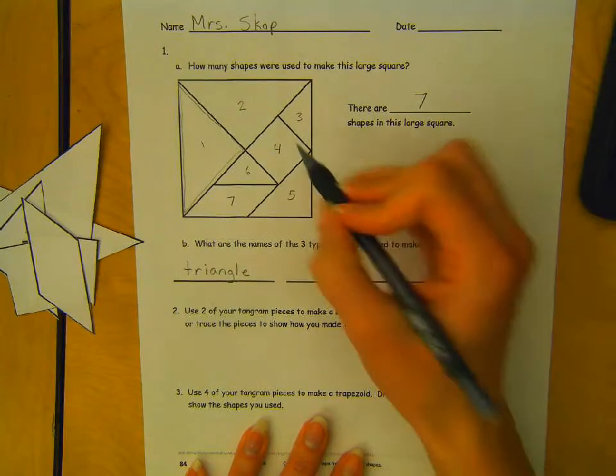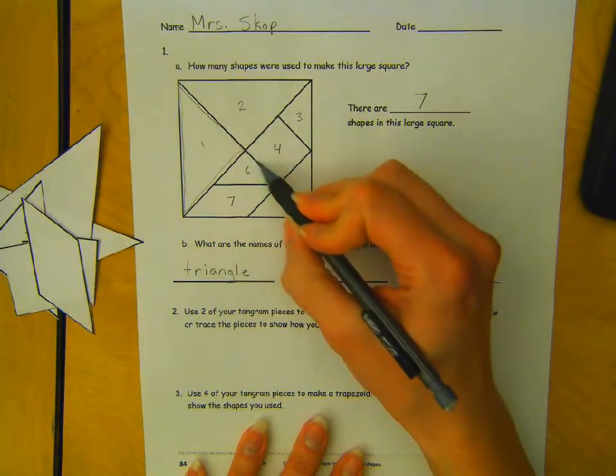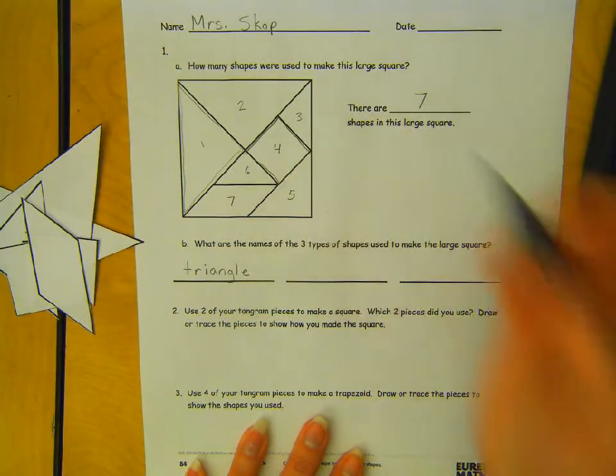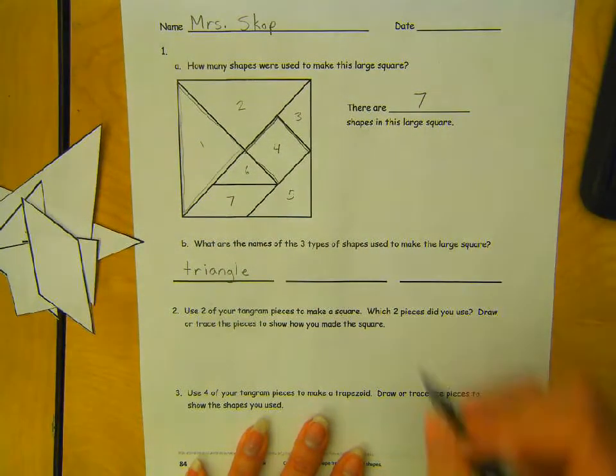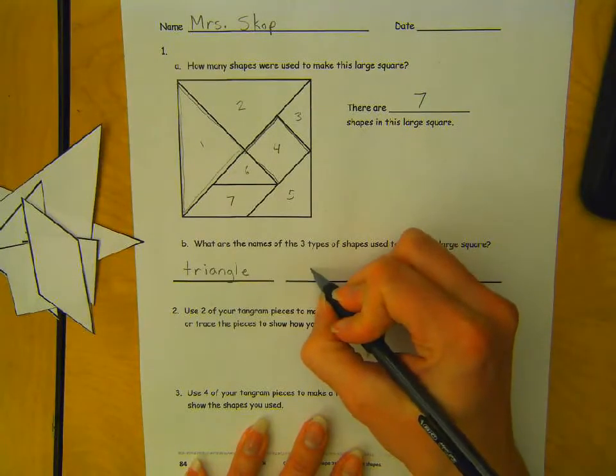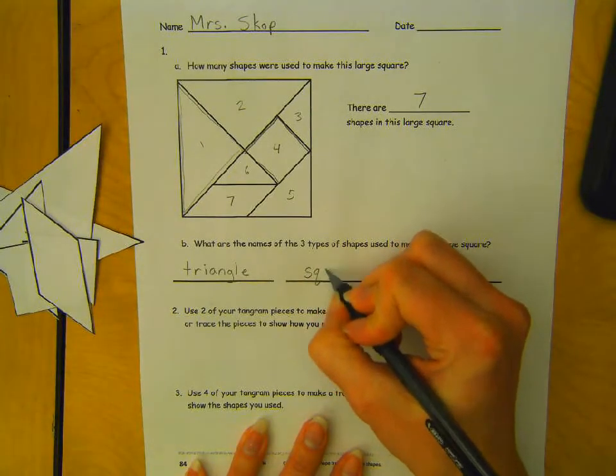We also have this shape right here. What's that? That's a square.